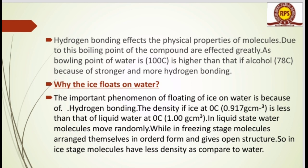The density of ice at 0°C is 0.917 g/cm³, which is less than liquid water at 0°C, which is 1 g/cm³. In liquid state, water molecules move randomly, while in the freezing stage, molecules arrange themselves in an ordered open structure. In the ice stage, molecules have less density compared to liquid water. Strongly attached molecules in ice cause its density to decrease, which is why ice floats on water.